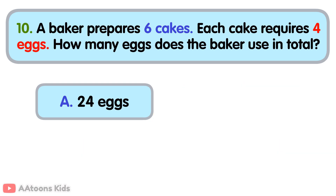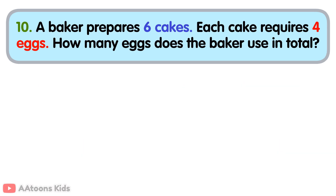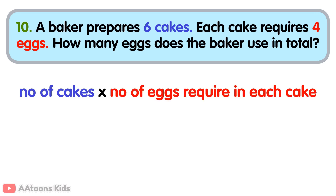Twenty-four eggs. To find the total number of eggs, multiply the number of cakes by the number of eggs required for each cake. Total number of cakes is six. Number of eggs required per cake is four. Now, six multiplied by four is twenty-four. So, the baker uses twenty-four eggs in total.